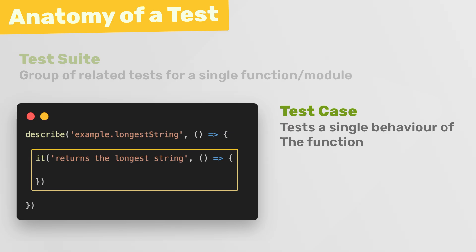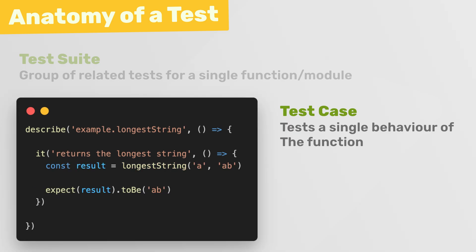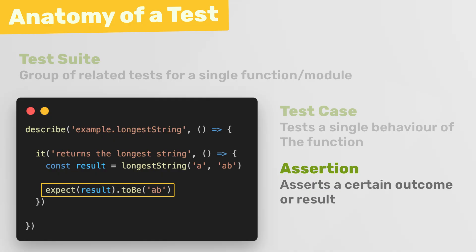Inside the test function we typically run the function we're testing, pass it some input values, and store the result in a variable. Then we make assertions about that return value using another Vitest function called expect. We run expect and pass in the value we want to test, then chain on one of Vitest's matcher methods like toBe to describe what we'd expect the value to be — in this case the longer of the two strings. This line is called an assertion.